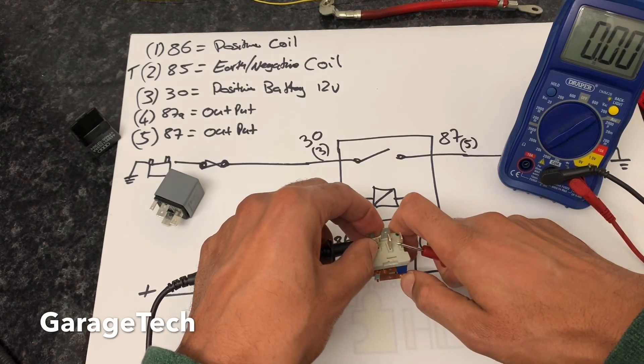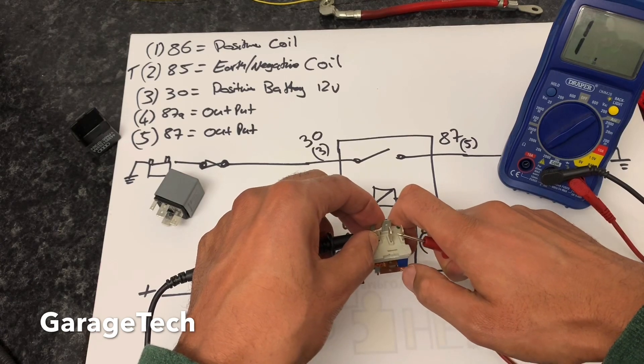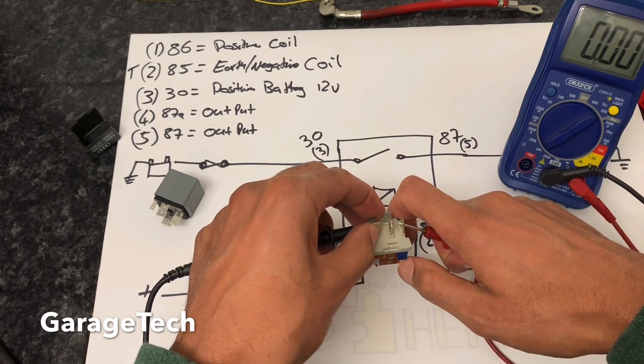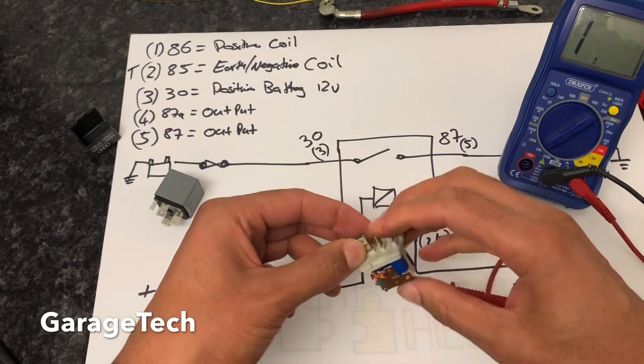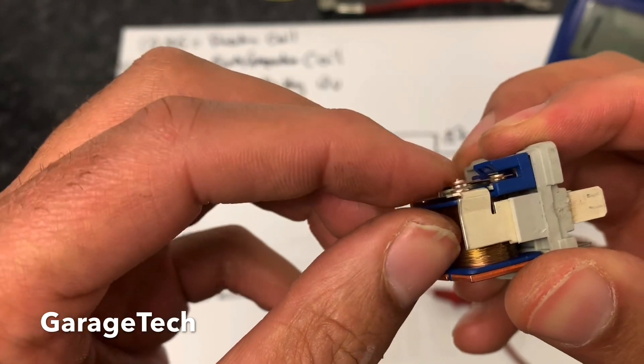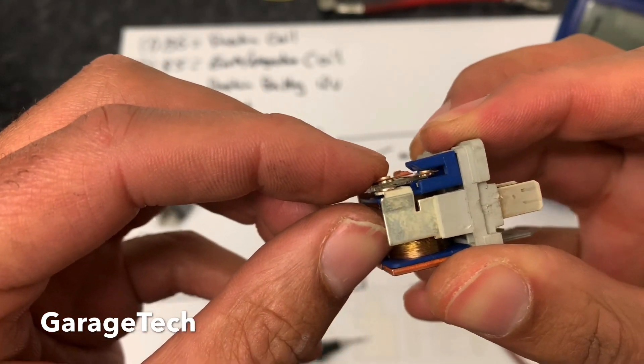When I press the switch close, you can see it's then going to zero. So I know that those switched contacts are in good working order because what can happen is these can become pitted and worn out over a period of time, and that could be why your relay is not working.